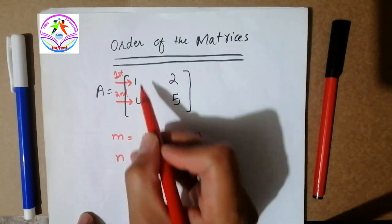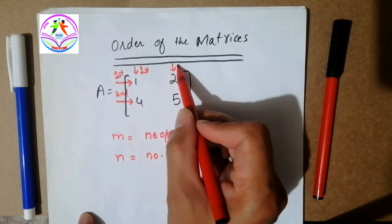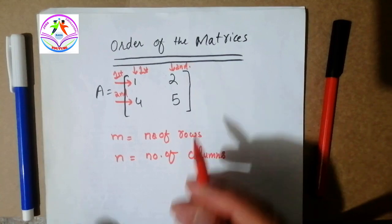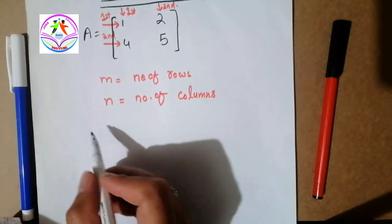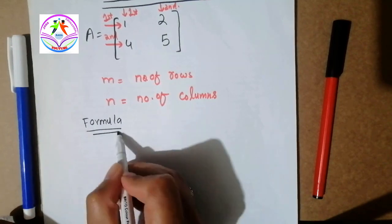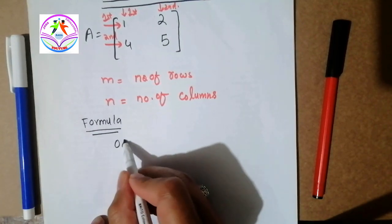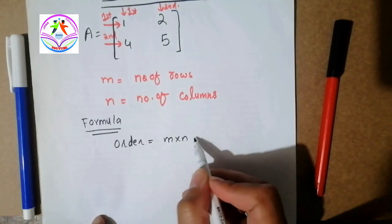So let me show you the formula of order of the matrices. Let me write that formula. Formula is order is equal to m cross n, or we can say that m by n.